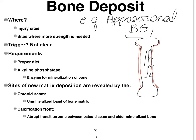Where we see new bone matrix deposited — which initially starts with osteoid — the osteoid secreted by the osteoblasts sits there as a band, better referred to as the osteoid seam. Osteoid is just unmineralized bone matrix. It sits there for a while, and then suddenly, especially with the help of the enzyme alkaline phosphatase, it becomes mineralized. This happens rather fast once mineralization occurs — it's not a very gradual process. So we see the osteoid seam sitting there, and then there is an abrupt change to the existing compact bone tissue, sometimes referred to as the calcification front.